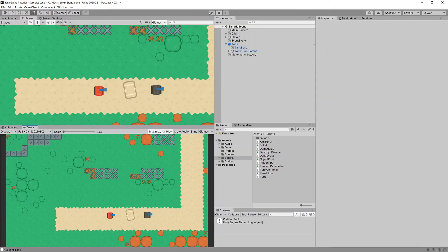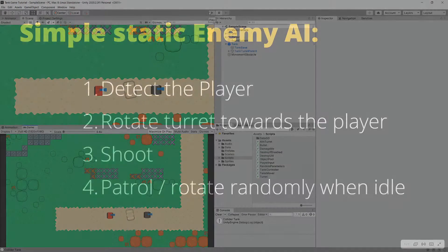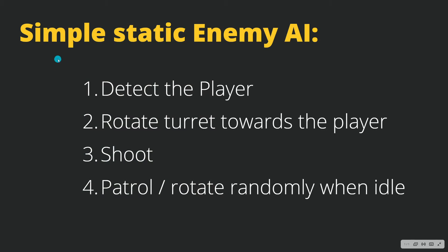I would like to create a static enemy in this video. A simple static enemy would need: first, the ability to detect the player when it is approaching; next, the ability to rotate the turret towards the player so we can perform a shot; and if the player is not in range, I would like the enemy to patrol and rotate randomly while idle.